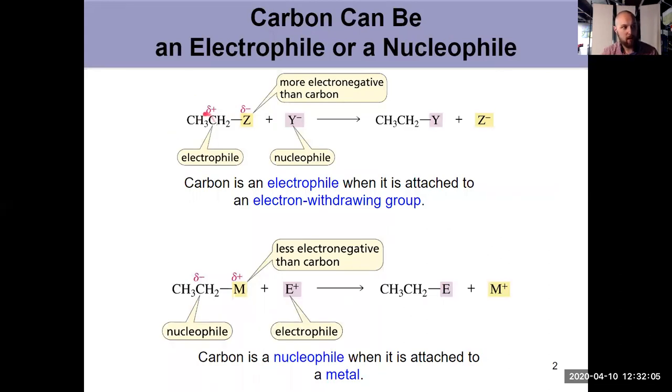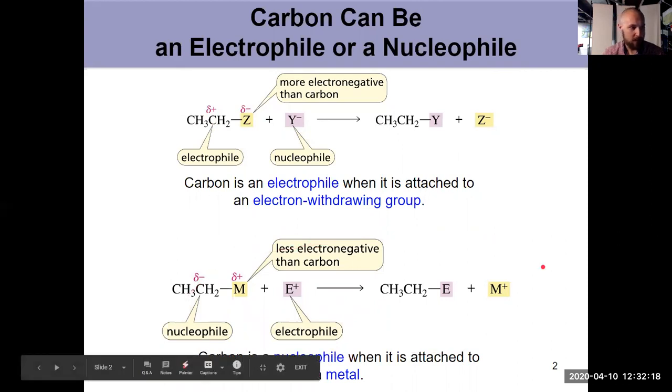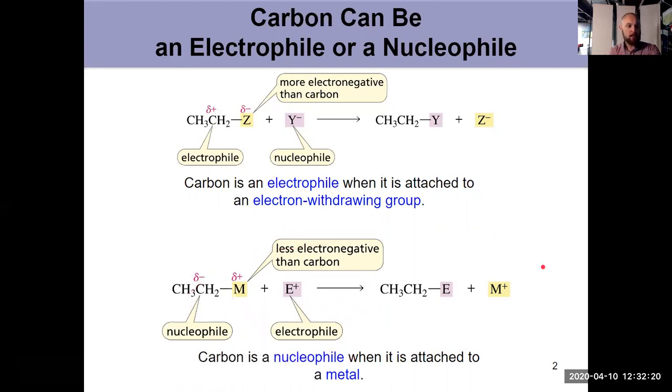It's an electrophile, will react with a nucleophile. But Chapter 11 is focusing on what we have down here - I take my carbon and attach it to something less electronegative. That gives me a delta negative on carbon because now carbon is the thing that's more electronegative.